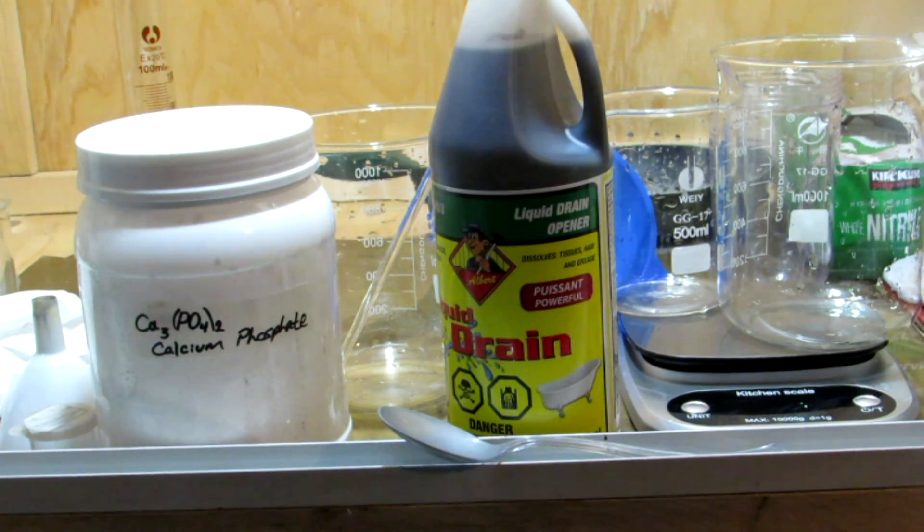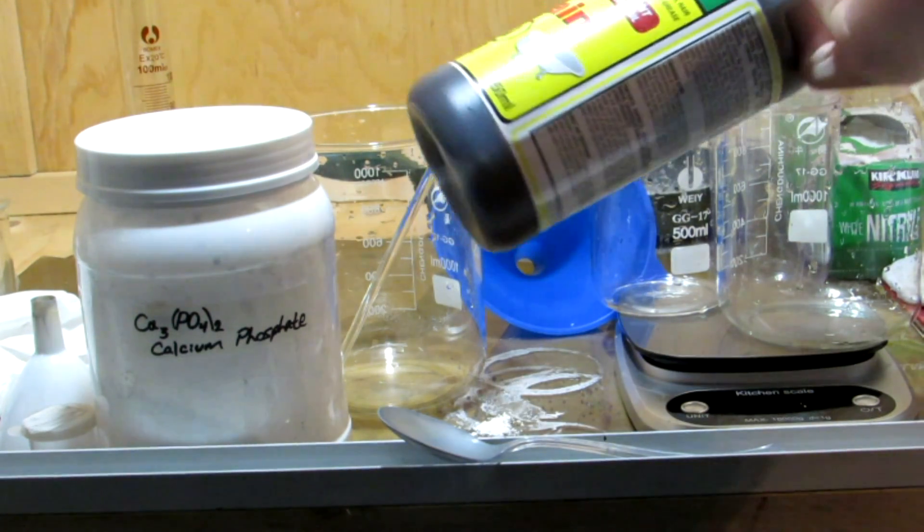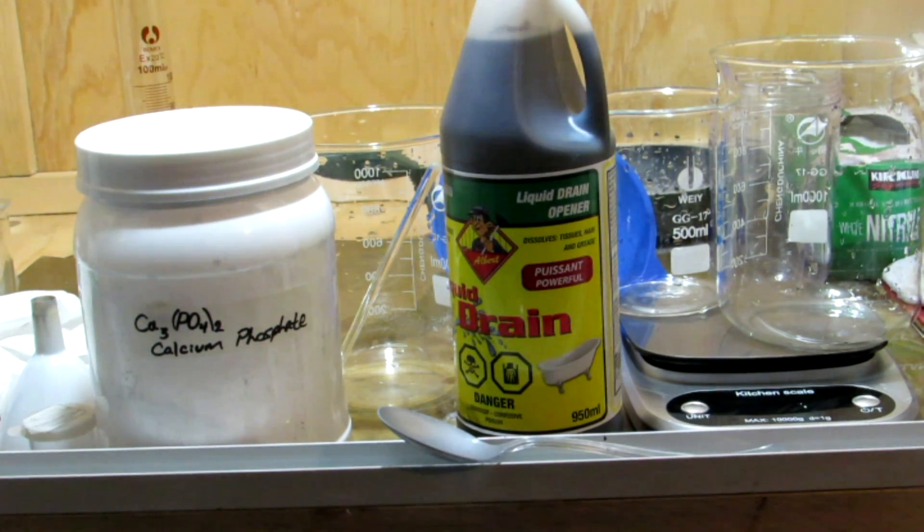Hey guys and welcome back to another video. Today we're going to be making monosodium dihydrogen phosphate. This chemical can be made fairly simply from calcium phosphate, sulfuric acid, and sodium hydroxide. These are all easily obtainable from household materials. Sulfuric acid is found at hardware stores such as Rona, which is where I got mine.